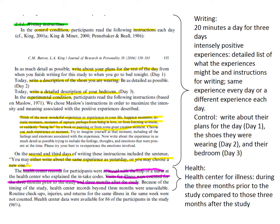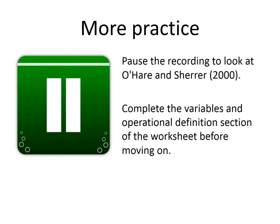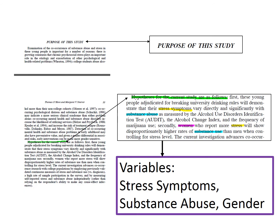Your notes on the article summary template should include at least the information included in the example in the slide. If you've not already done so, make sure to add your notes to the corresponding sections of the article summary template before moving on. Now, you can pause this recording to look at O'Hare and Share, completing the Variables and Operational Definitions section of that worksheet before moving on. In this case, the authors present two hypotheses that include three variables, as noted in this slide.